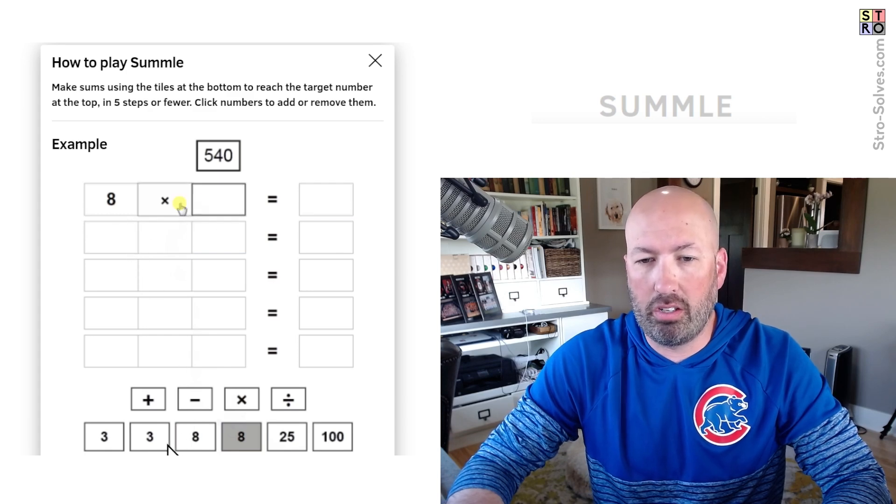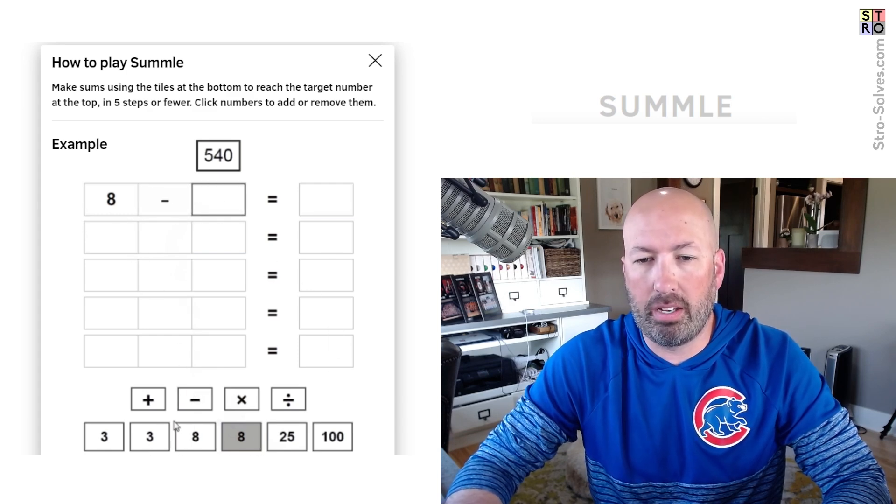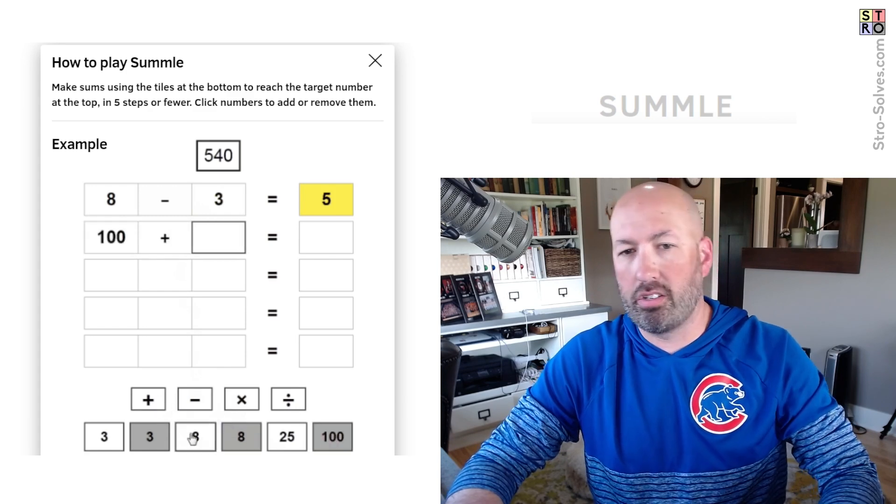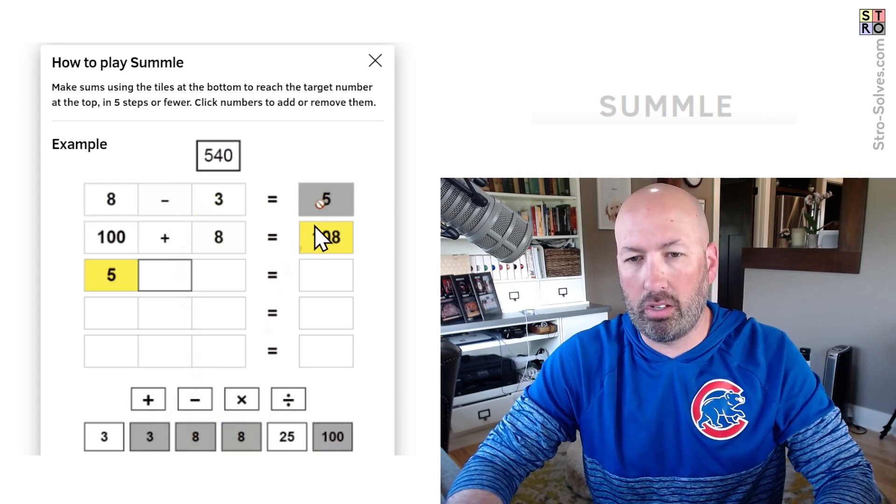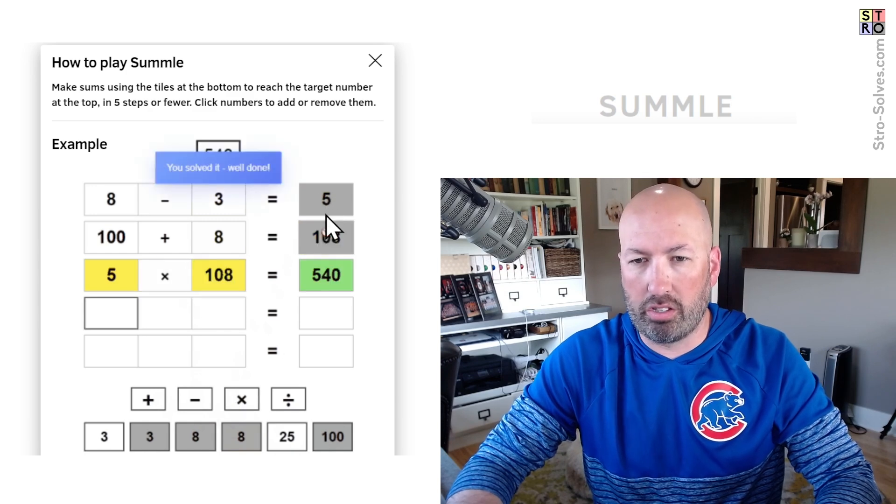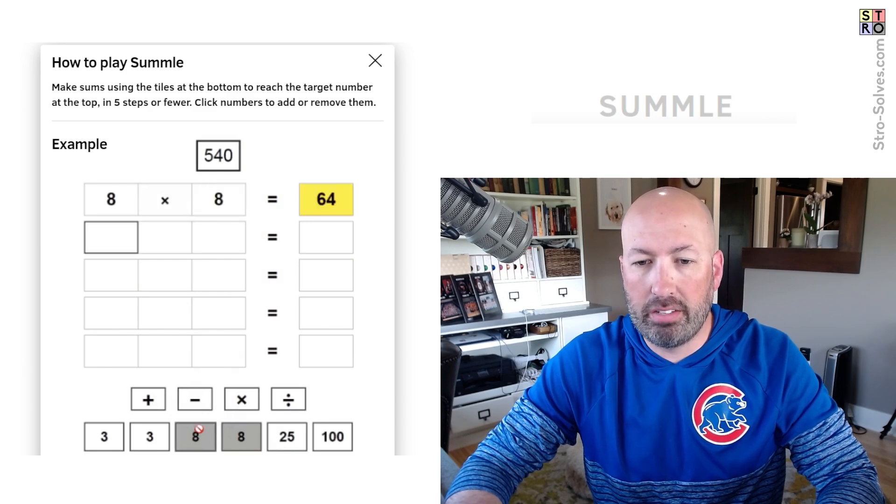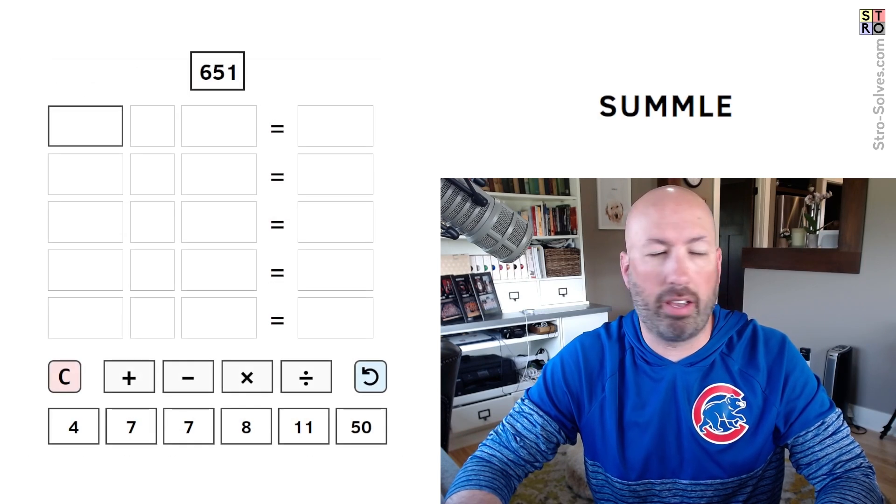And so basically you click on the numbers down below, you put them in up above as this little video is showing us, and you're trying to just make the target number at the top. And you can click on the yellow numbers, your results here, to use them in the future operations. It says there is at least one solution, okay?